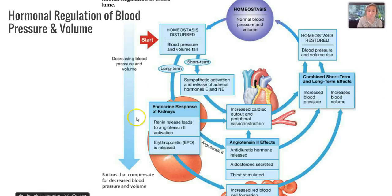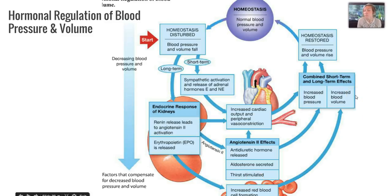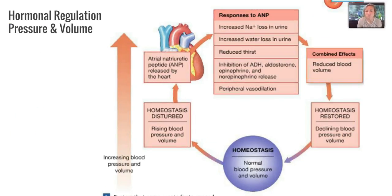If we have a decrease in blood pressure and volume, homeostasis will be disturbed. There's a short-term effect controlled by sympathetic activation — releasing epinephrine and norepinephrine to increase cardiac output and peripheral vasoconstriction. We can also go into the endocrine response, which involves angiotensin II and erythropoietin, increasing red blood cell formation and volume. Along with angiotensin II, this increases blood pressure to restore normal rates. If we have an increase in blood pressure and volume, ANP comes into play — increasing sodium and water lost in urine, reducing thirst, inhibiting ADH, aldosterone, epinephrine, and norepinephrine, and causing peripheral vasodilation to reduce blood volume and restore homeostasis.